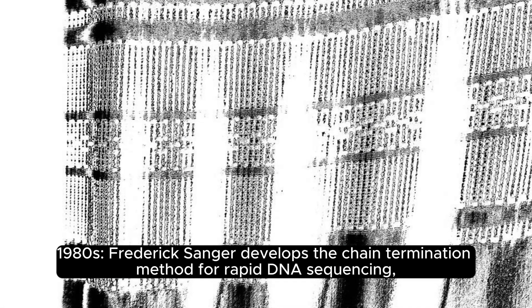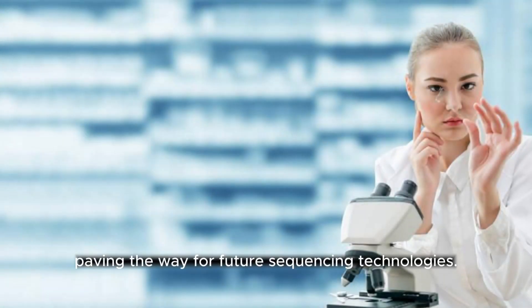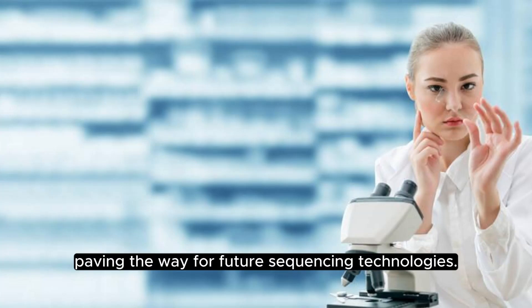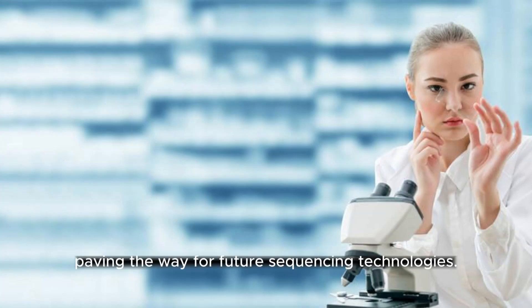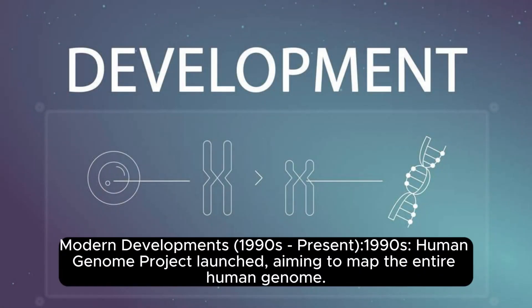1980: Frederick Sanger develops the chain termination method for rapid DNA sequencing, paving the way for future sequencing technologies.